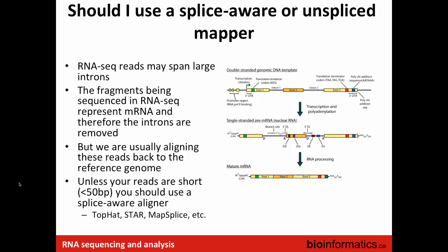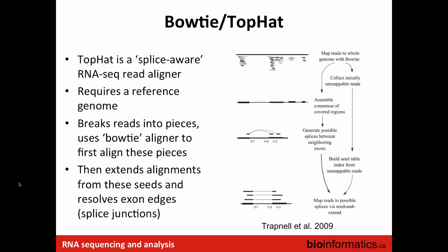Should you use a splice-aware or unsplice-aware mapper? We know that the RNA we have does not contain intronic regions. But if you plan to align it to a whole genome reference, the whole genome reference is DNA — it contains introns and exons. So you will have to pick a tool that is splice-aware. If you're aligning to a transcriptomic reference, then you don't have to pick a splice-aware tool.